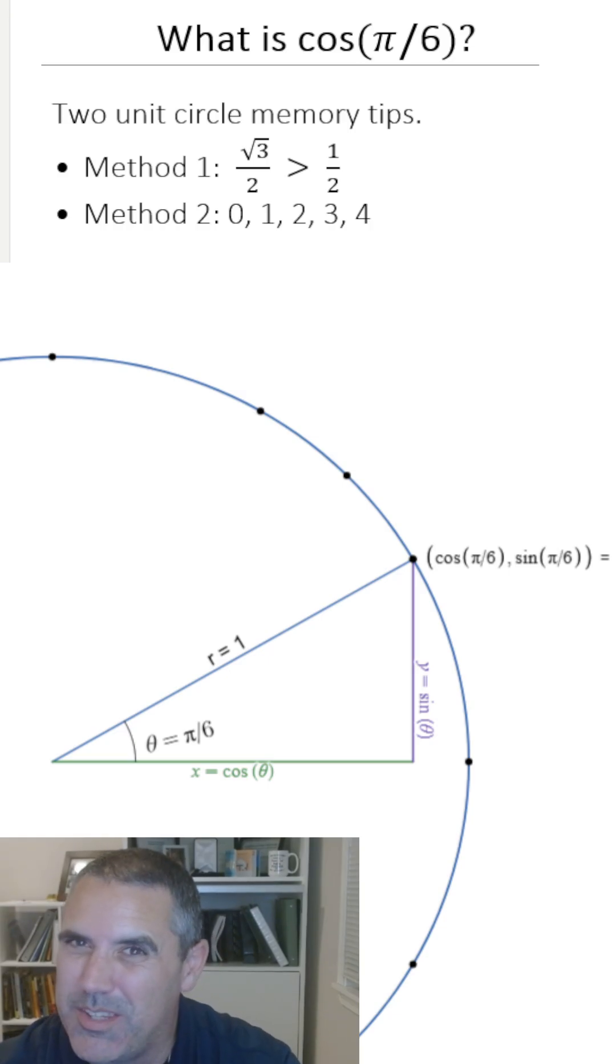If you can remember that the square root of 3 is bigger than 1, so the square root of 3 over 2 is bigger than a half, then you know the cosine has to be root 3 over 2. It's that simple.